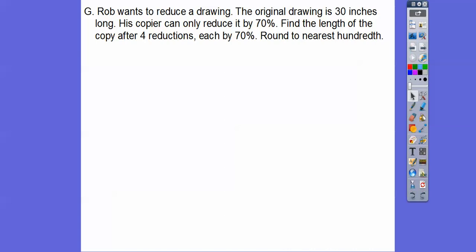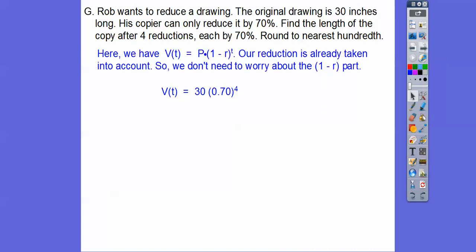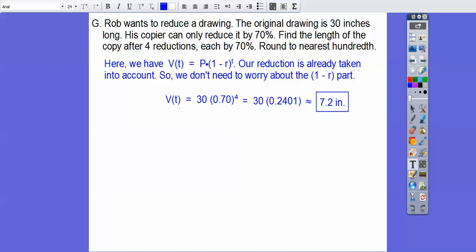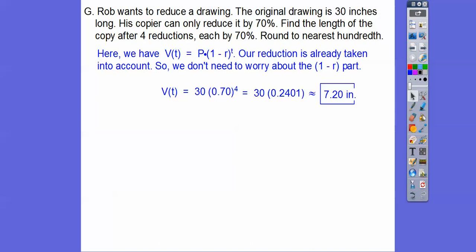Rob wants to reduce a drawing. The original drawing is 30 inches long. His copier can only reduce it by 70%. So find the length of the copy after four reductions. So this one's just going to be like the interest one right here. So the 1 minus r is already compensated in there with that 70% right there. So this 70% is what goes inside of here. So it's going to be the original size times 70% to the t power. And we're going to do it after four reductions. So t is our reduction rate right there. So if we plug that in the calculator, we get that, and then multiply, we get about 7.2. And it says round to the nearest hundredth. It should be 7.20. I missed that right there. That should be a 7.20. I think it's 7.203, but to the nearest hundredth is two decimal places, so tenths, hundredths. So 7.20.